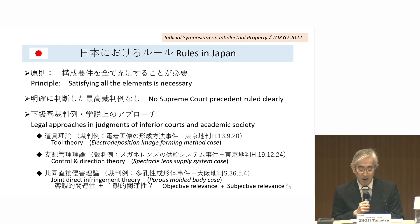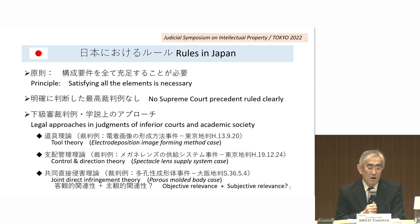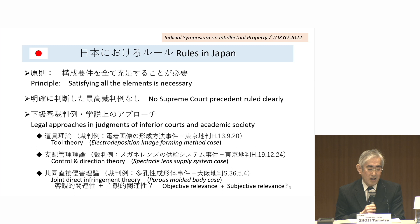Further, there is an opinion called joint direct infringement theory. According to this opinion, even when multiple entities dividedly implement the elements of a patented invention, as far as there is objective relevance between actions of multiple persons and subjective relevance, they shall be evaluated as having performed a joint act of direct infringement. This opinion may seem to be a ruling theory in academics, but views are different on whether joint intention to commit an infringing act jointly is essential and on what extent mutual understanding shall be sufficient. For now, there is no established theory, and the theories now explained are not necessarily incompatible with each other.